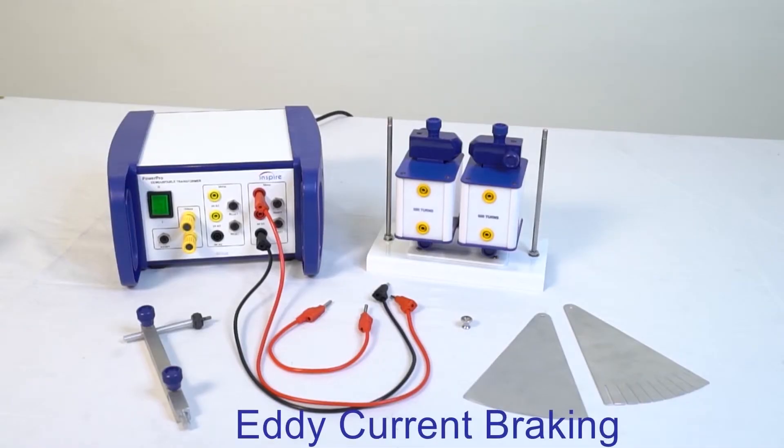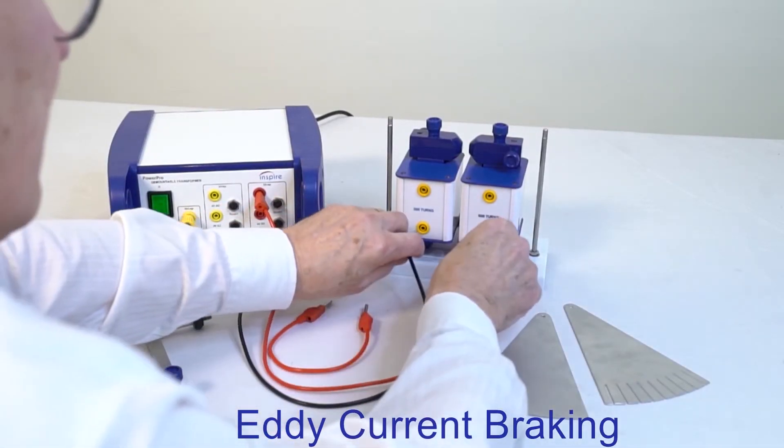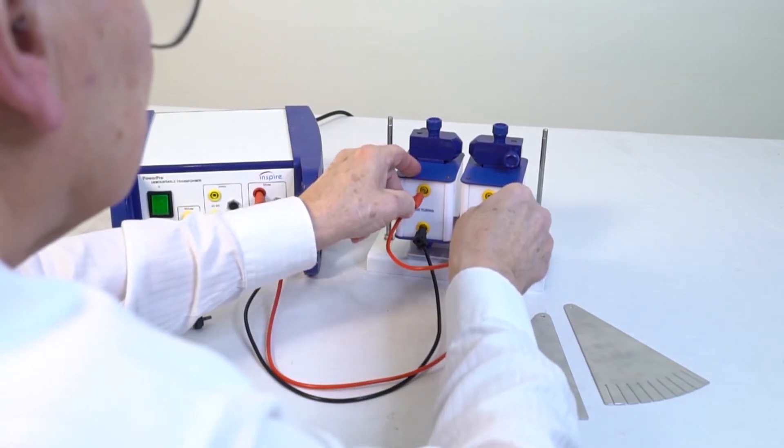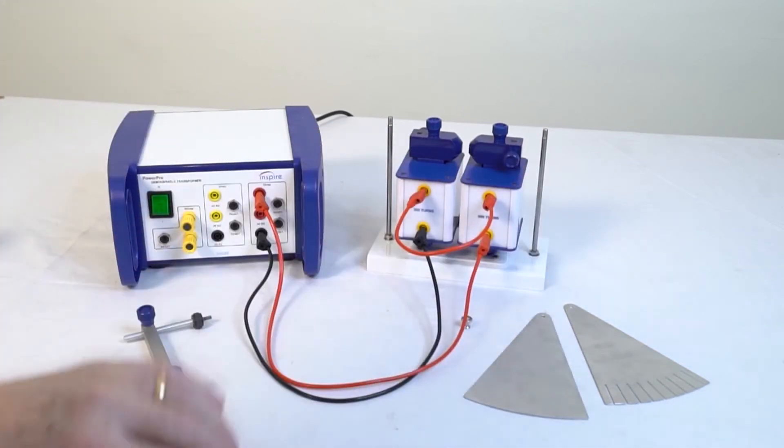In this experiment two coils are connected in series and supplied with 8V DC. This provides a steady rather than an alternating magnetic field.